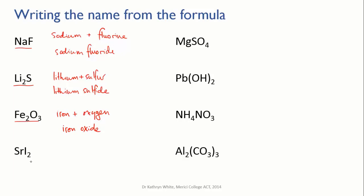This next one, SrI2 - Sr is strontium, which burns with a beautiful red color. It's made from strontium and iodine. The iodine is the negative ion, so it becomes iodide. The full name of the compound is strontium iodide.